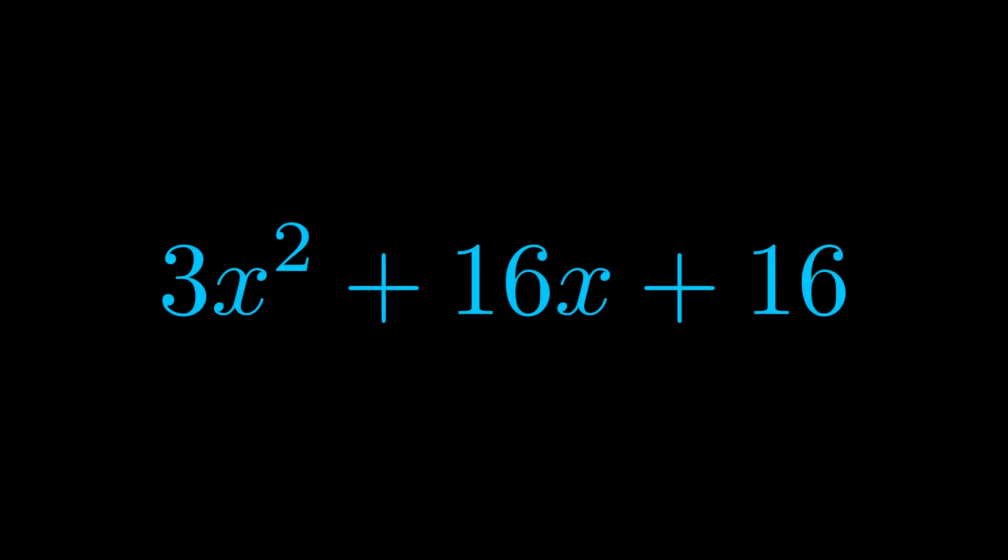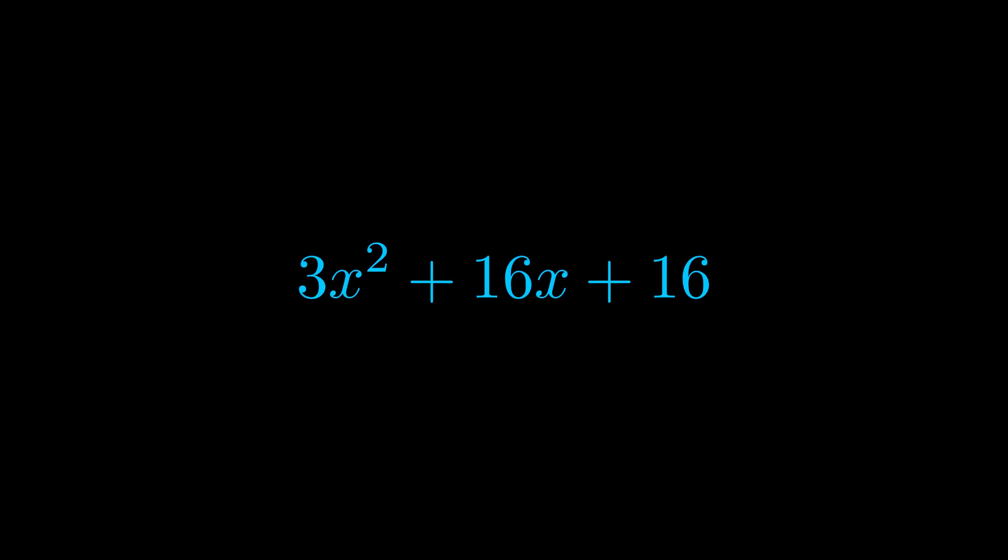Step one when factoring an equation of this form is to multiply the a value by the c value. Here we can see that our a value is the coefficient on the x squared term and our c value is the constant term.